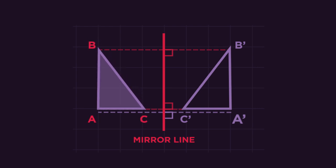See how the triangle ABC and the reflected triangle are equal distances away from the mirror line.